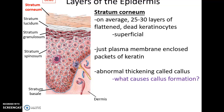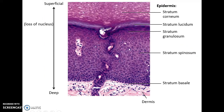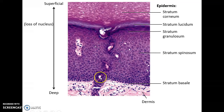Sometimes stratum corneum cells thicken, forming a callus; friction causes increased cell production in those locations. New cells are pushed up from stratum basale, deposited into stratum spinosum, and those push the cells above them higher and higher, closer to the surface, passing through the various strata. A labeled image shows stratum corneum at the top, stratum lucidum (indicating thick skin), stratum granulosum, stratum spinosum, and stratum basale attached to the basement membrane and dermis below.